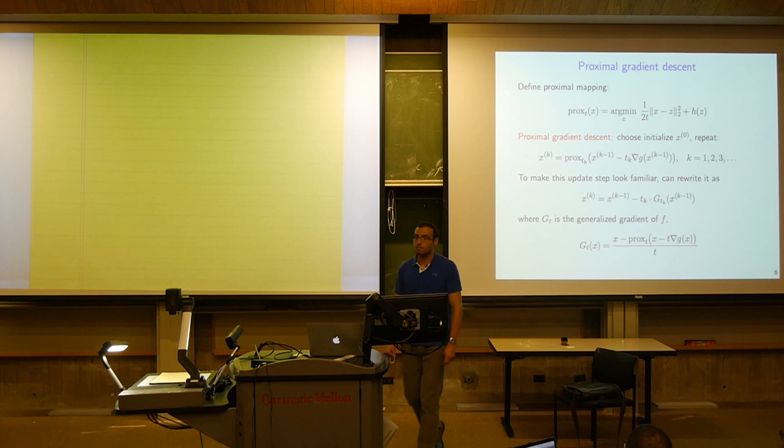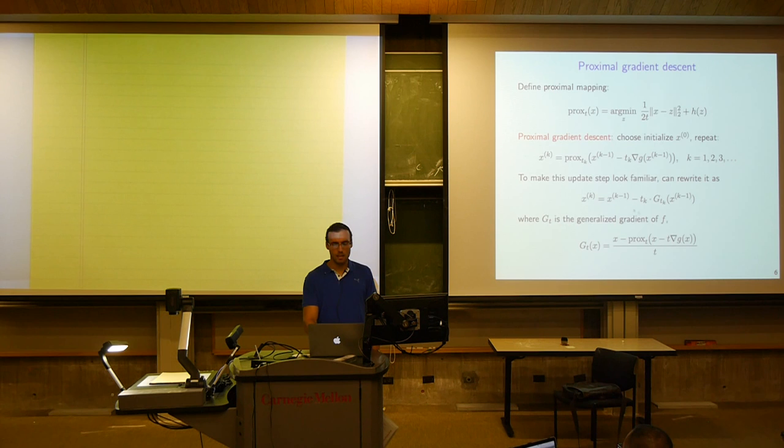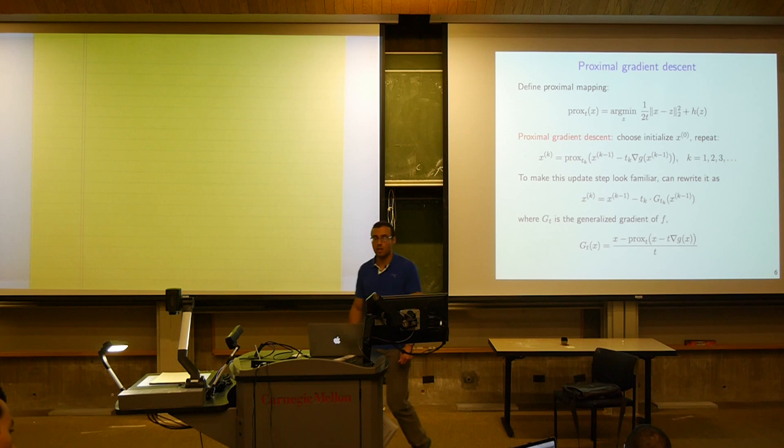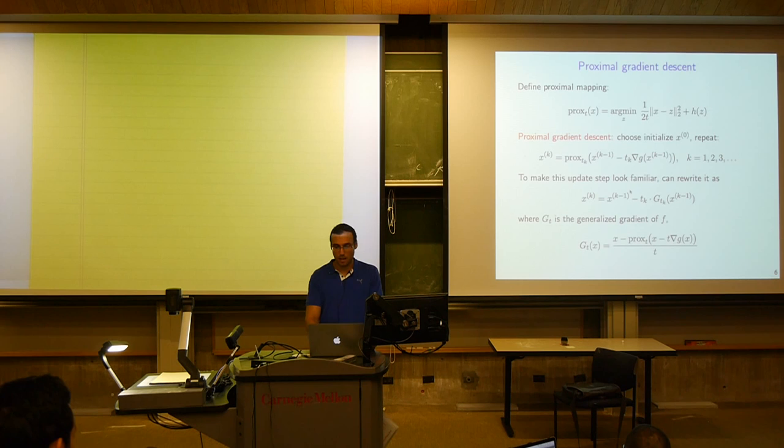That was proximal gradient descent. Sometimes to make it look more familiar, we write it as the previous iterate x minus the step size tk times something called the generalized gradient, where this is just defined so that the expression is nothing more than the prox update. We just define the generalized gradient so we can write it in this form, because it looks like gradient descent and behaves like a gradient in some ways.